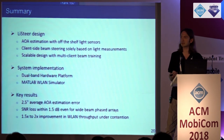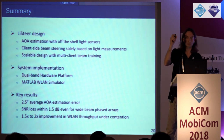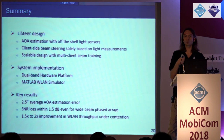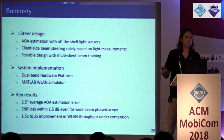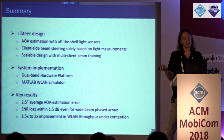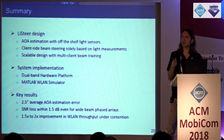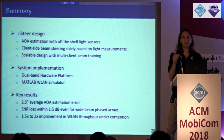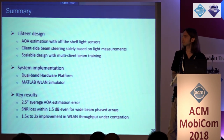To summarize LightSteer: we presented angle of arrival estimation with off-the-shelf light sensors by repurposing the notification LEDs on access points. We perform client-side beam steering solely based on light measurements — zero in-band measurements — and have a scalable design that allows the access point to train with multiple clients using just one sector-level sweep by repurposing the periodic beacon sweeps. We evaluated using a combined light VLC and millimeter wave testbed, augmented with MATLAB simulations. Key results: 2.5-degree average angle of arrival estimation error, SNR loss within 1.5 dB for 80% of cases even with wide-beam irregular pattern phase arrays, and 1.5 to 2x throughput improvement in wireless LANs due to the reduction in overhead.